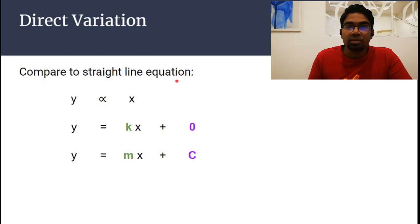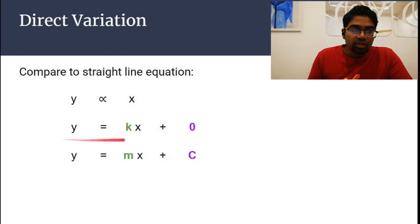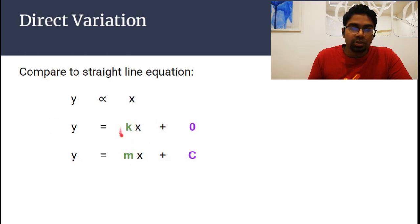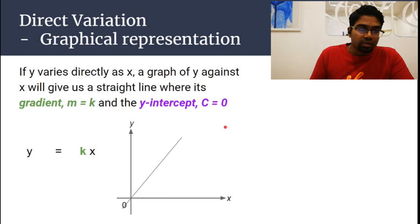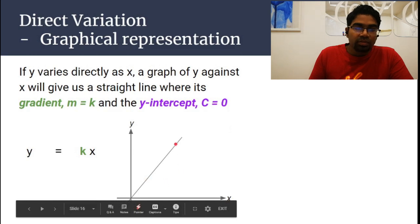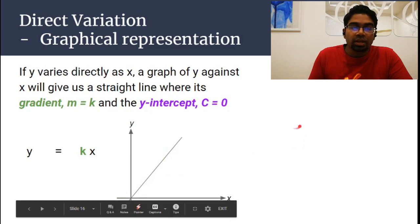Now let's compare with the straight-line equation. The general form is y equals mx plus c. Comparing with our direct variation equation y equals kx, we notice that the gradient m equals k — so k is actually the gradient of the straight line. The y-intercept c is zero. In the graphical representation of direct variation, the gradient gives the value of k and the y-intercept must be zero.